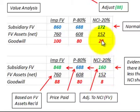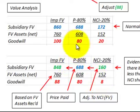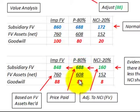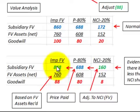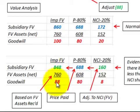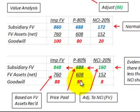The non-controlling interest goodwill was lowered from $20,000 down to $8,000 with this adjustment. The parent's portion stays the same at $80,000. The total fair value has been adjusted down to $848,000 by this adjustment to the subsidiary's total fair value. Taking $848,000 less the fair value of the net assets of $760,000 leaves us with total goodwill of $88,000, which is the sum of the parent's portion of $80,000 plus the non-controlling interest portion of $8,000.